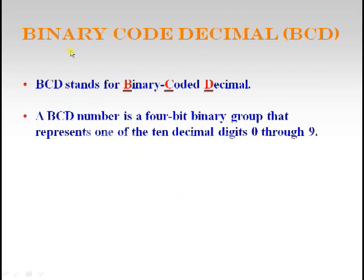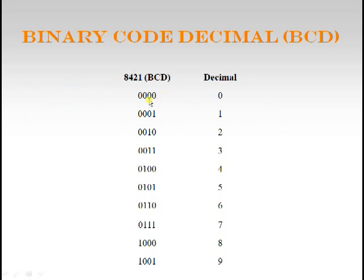Let us start with weighted codes — BCD stands for Binary Coded Decimal. A BCD number is a 4-bit binary group representing one of the 10 decimal digits 0 through 9. Using 8-4-2-1 weighting: 0000 represents 0, placing a 1 at weight position 1 gives decimal 1, placing a 1 at weight position 2 gives decimal 2, and placing 1s at weights 2 and 1 gives decimal 3 by adding the weights.